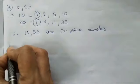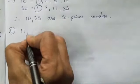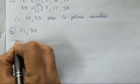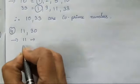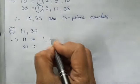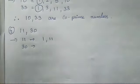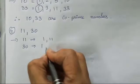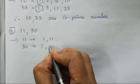10 and 33 are co-prime numbers. Fourth question is 11 and 30. So the factors of 11 and 30 are 11's factors, 1 and 11. 11 is in 1's table and 11's table. Then, 30's factors are 1, 2,